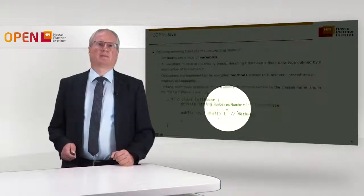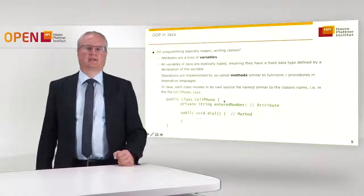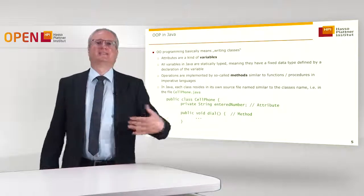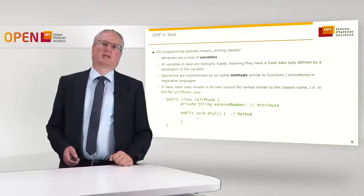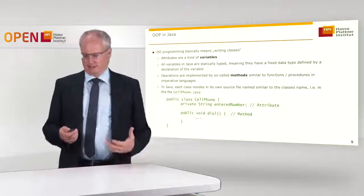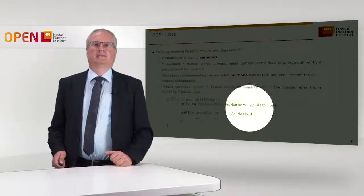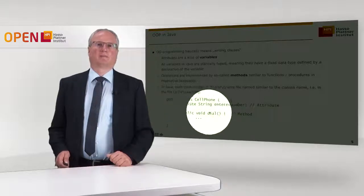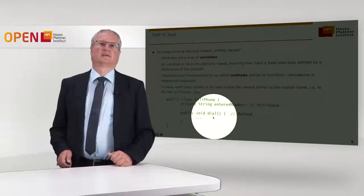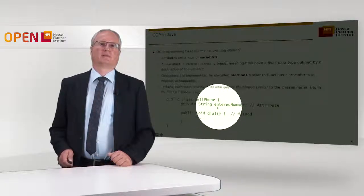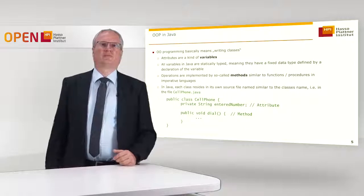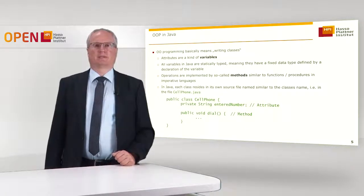The class CellPhone describes the set of possible cell phones. A cell phone is like a little machine that you can interact with, and to describe this we have methods. This simple method, for example, would be called 'dial' and it would dial the entered number. So the method depends on the value that has been entered before. Of course, this is just an excerpt from a possible class, but it describes the syntax.